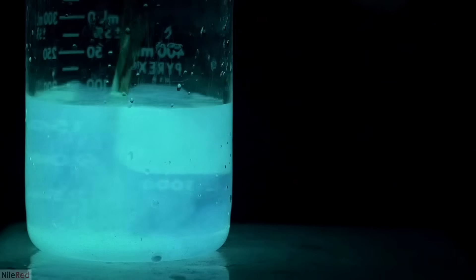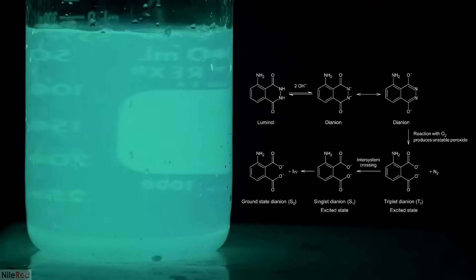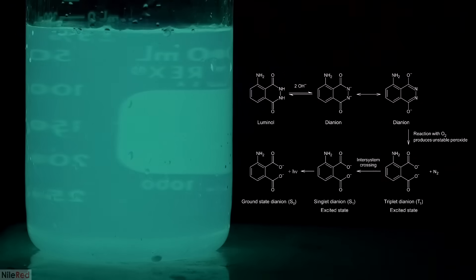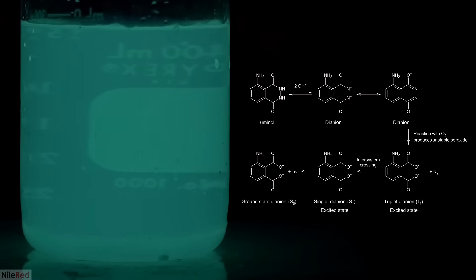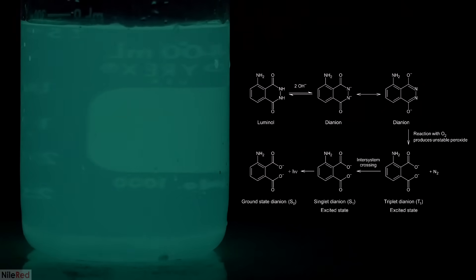A common example of the direct emission is luminol. When luminol is oxidized, it goes into an excited state, and when it falls back down, it radiates light with a characteristic blue color. The important thing to remember is that with the direct mechanism, the color is highly dependent on the intermediate that's decaying.